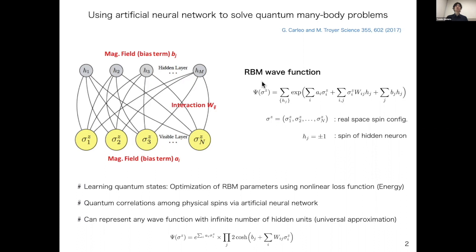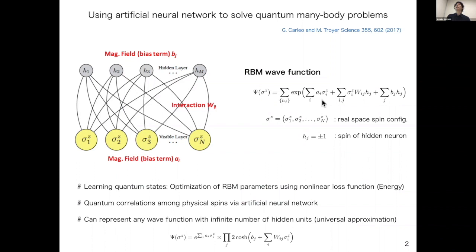The structure of the RBM looks like this. Here we have the sigma spins, which correspond to the physical degrees of freedom, and the H spins, which correspond to the auxiliary degrees of freedom. Both sigma spins and H spins are defined as Ising spins. The form of the RBM wave function is given by this equation, where A and B are the magnetic fields on sigma and H, and W is the interaction between them.